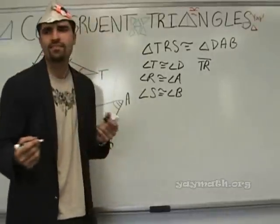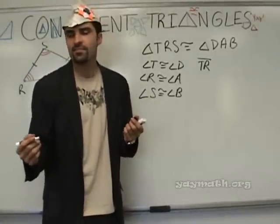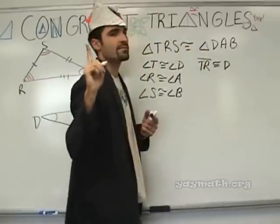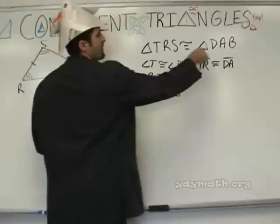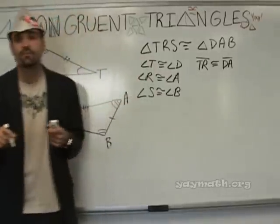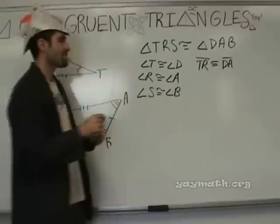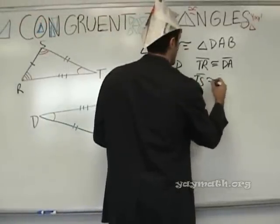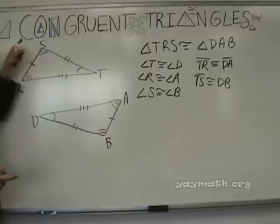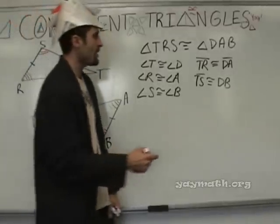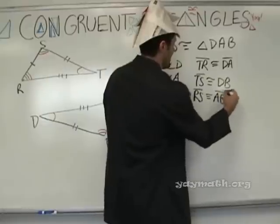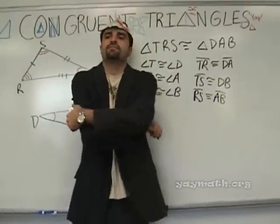Segment TR is congruent to segment DA. Because you're going from the one, one to two. One to two. Next. What's another one? TS congruent to DB. One to three. One to three. And then we confirm also, is TS the same as DB? Yes. And what's another one? RS congruent to AB.